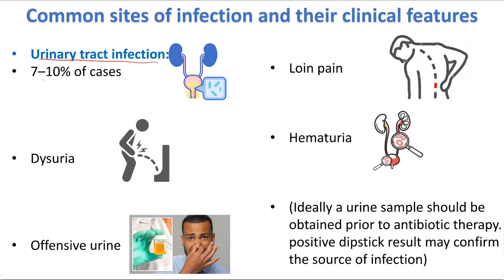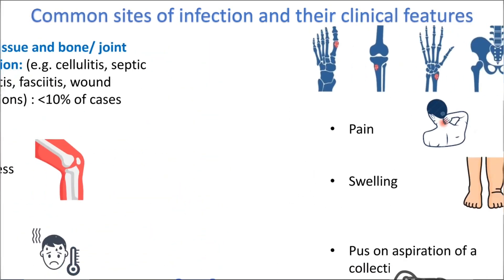Urinary tract infections account for 7% to 10% of cases of sepsis. The patient will have dysuria, offensive urine, loin pain, and hematuria. Ideally, a urine sample should be obtained prior to antibiotic therapy. A positive dipstick result may confirm the source of infection, but you should not delay starting treatment while waiting for culture results.